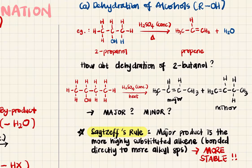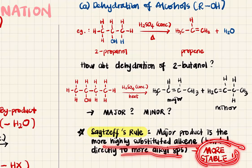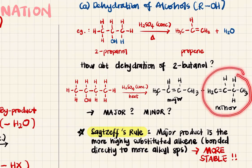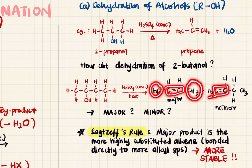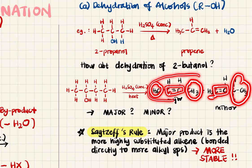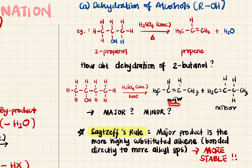According to Zaitsev's rule, the major product is the more highly substituted alkene — the one bonded directly to more alkyl groups — as it is more stable and forms in greater quantity. The minor product is less stable and forms less. To determine the major product, identify all possible products and count the alkyl groups attached to each side of the double bond. For example, one product has two alkyl groups at the double bond while another has only one — so the one with two alkyl groups is the major product.